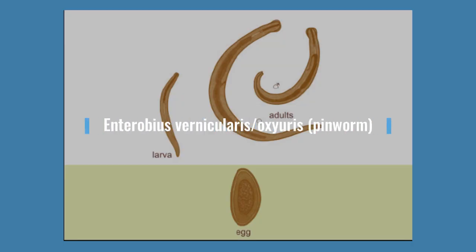The next example is Enterobius vermicularis. This is also called Oxyuris, and it is commonly called pinworm.